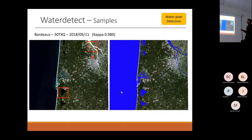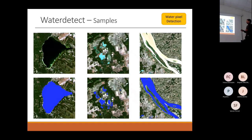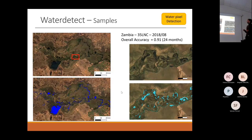Zooming into these red squares, we have samples where you can see water with very different colors, charted with sediments or chlorophyll, and it worked flawlessly. This is another example in Zambia, where we have an overall accuracy of 0.91.